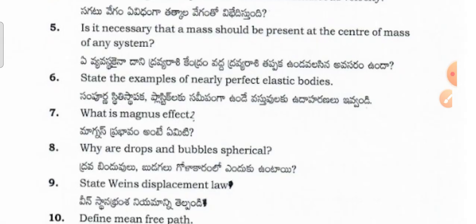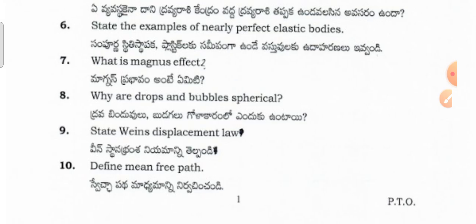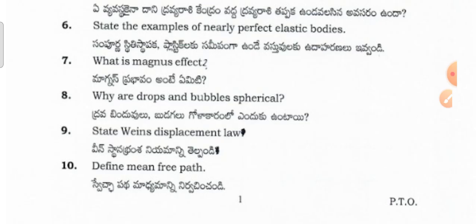Is it necessary that a mass should be present at the center of mass of any system? State the examples of nearby perfect elastic bodies. What is the Magnus effect? Why are drops and bubbles spherical? State Bernoulli's displacement law.